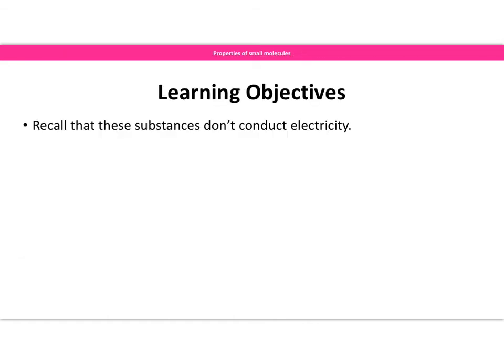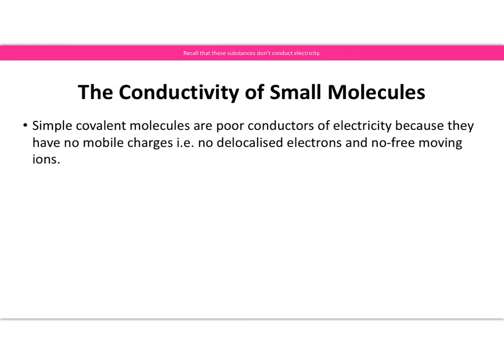Small molecules do not conduct electricity. For electrical conduction we need a flow of charge, which requires charged particles that can move — either delocalised electrons or free-moving ions. Small molecules have neither delocalised electrons nor ions, so they are very poor conductors of electricity.